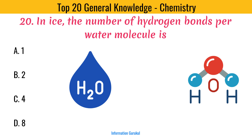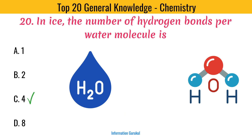In ice, the number of hydrogen bonds per water molecule is 4.